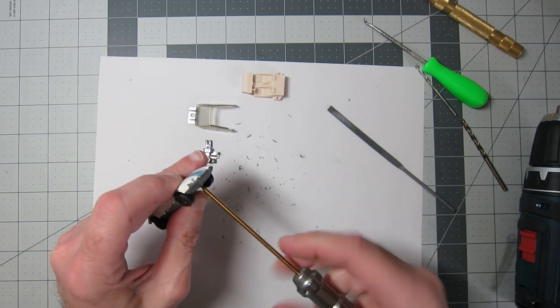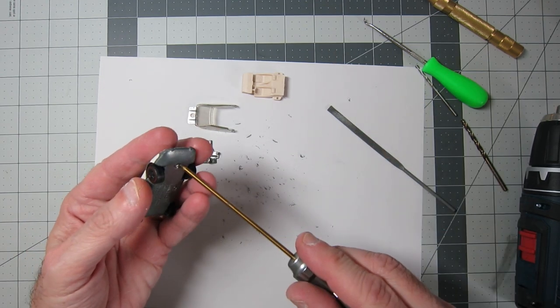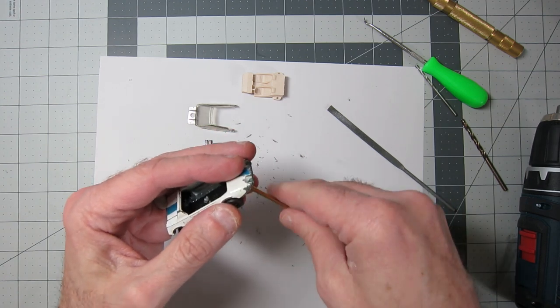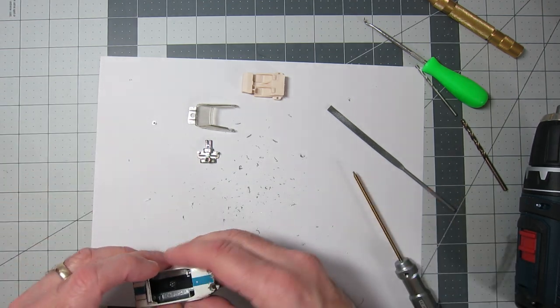And once I had that situated, then it was time to throw it in the stripper. Paint came off really easily using citrus strip. I just let it sit overnight. And by the next day, it's good to go.